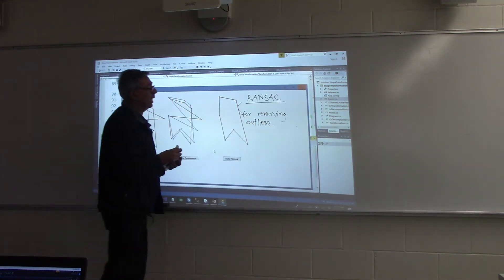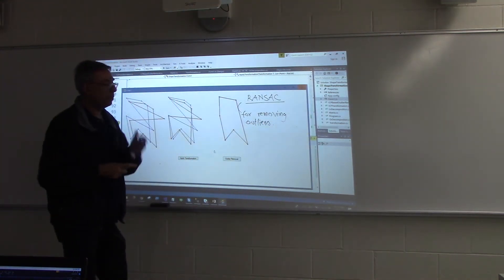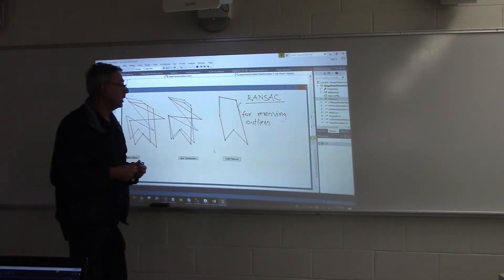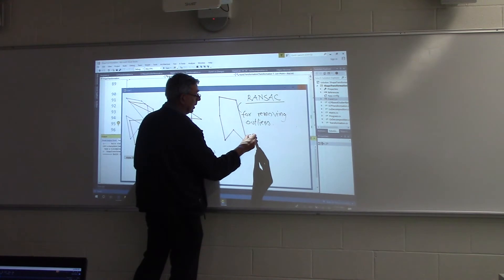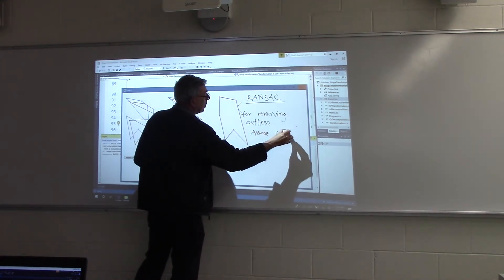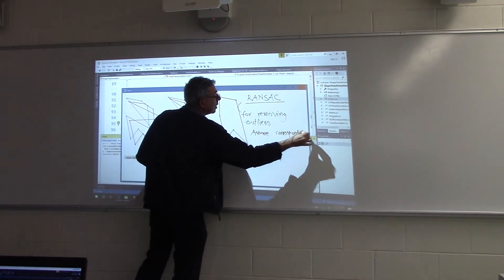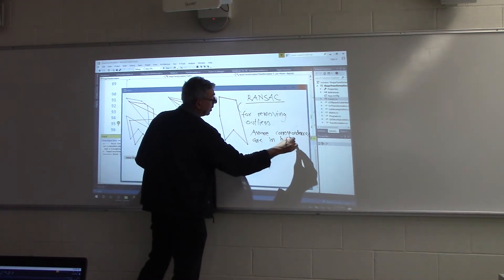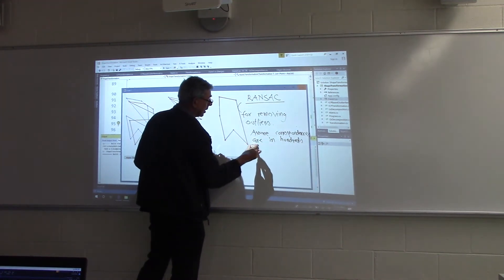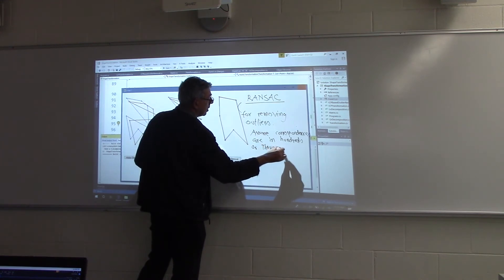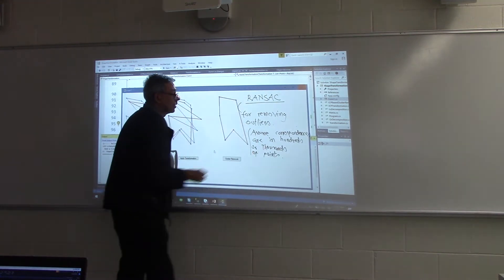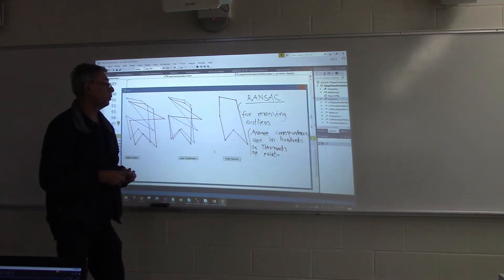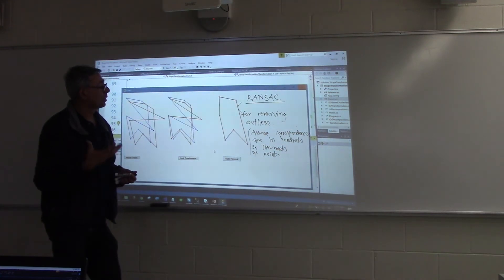It's a simple algorithm. The basic idea is very simple. So now pretend, assume correspondences are in hundreds of points, hundreds or thousands of points. And some of these are outliers, so we wanted to remove them.